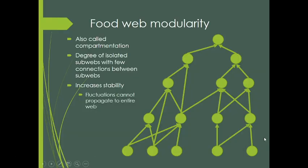Hello everybody. This lecture is looking at food web modularity and also some miscellaneous stuff about food webs. This idea of modularity is also called compartmentation, and it's basically looking at whether there are different pathways within the food web or different groups of species. The formal definition looks at the degree of isolated subwebs with few connections between the subwebs.